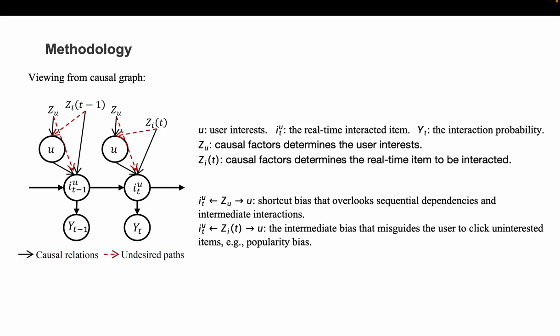the user interest, the interacted item at each time step, the interaction probability, the potential causal factors that determine the user interest over time, and those that causally affect the real-time interaction respectively.